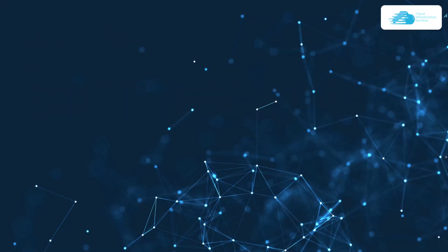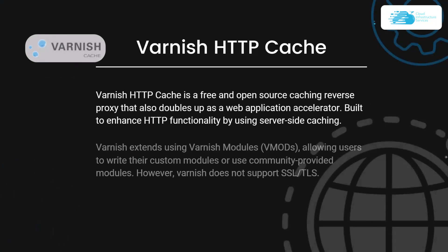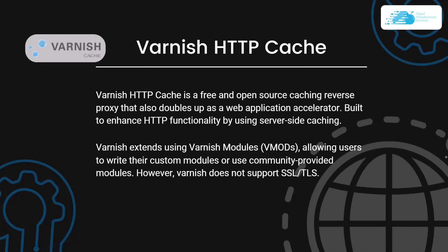At number 3 we have Varnish HTTP cache. Varnish HTTP cache is a free and open source caching reverse proxy that also doubles as a web application accelerator. It is built to enhance HTTP functionality by using server-side caching. Varnish extends using Varnish modules, known as VMODs, allowing users to write their custom modules or use community-provided modules. However, Varnish does not support SSL or TLS.